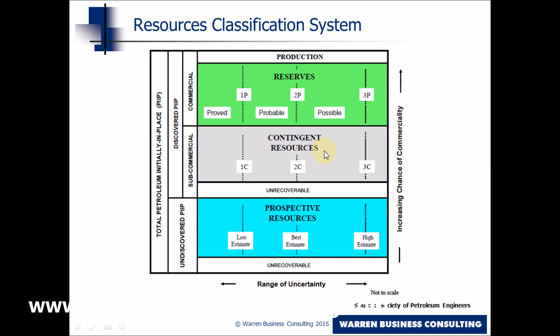And then the last category is prospective resources. These are undiscovered accumulations that will be subject to future developments, and are potential quantities that are therefore available. The convention we use for prospective resources to describe the uncertainty in volumes is low, best, and high estimates. Of course, some of the oil and gas will never be recoverable, and that's shown by these tranches here.